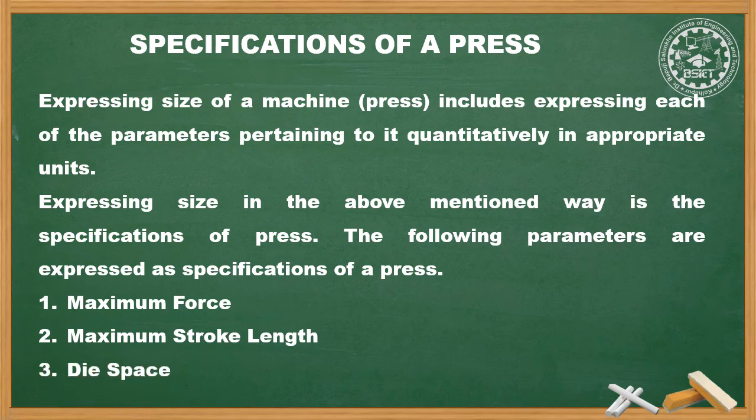The third specification is die space. Die space is the total maximum surface area along with the breadth and depth of the bed and base. This is the area in which the die can be maintained.